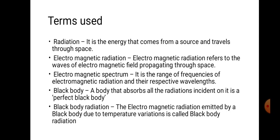Black body: the basic definition is any body that absorbs all the radiation falling on it is called a black body. Practically, there is no ideal black body available, but we can approximately construct one. The radiation coming from a black body is called black body radiation, and it is emitted due to temperature variations.